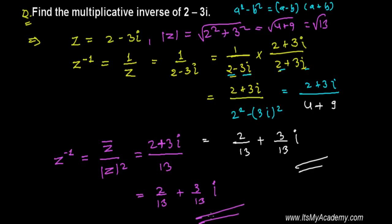All right, and this is the multiplicative inverse of the complex number given 2 minus 3i. I hope you understand it, and if there is any more confusion please feel free to ask me. All right, and I will see you in the next video. Bye-bye.